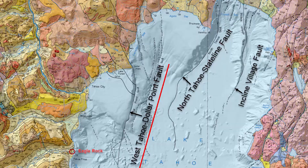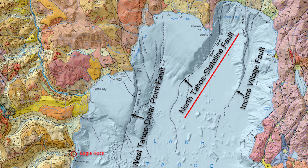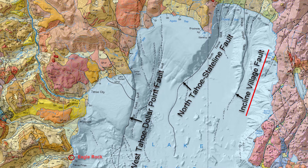Movement along this fault started about three million years ago. As faulting continues, the lake got deeper and continued to fill with water. Three other faults have also contributed to deepening the basin: the West Tahoe Dollar Point fault, which starts at Dollar Point and runs down through the lake parallel to the west shore; the North Tahoe State Line fault; and the Incline Village fault, which runs through Incline Village and down into the lake parallel to the North Tahoe State Line fault.